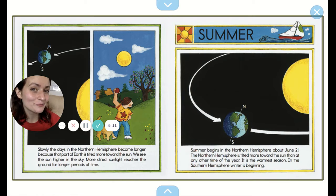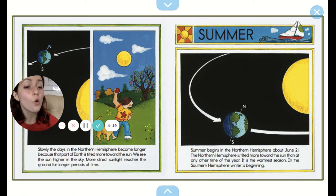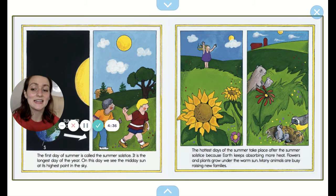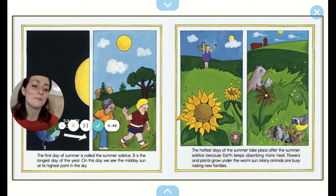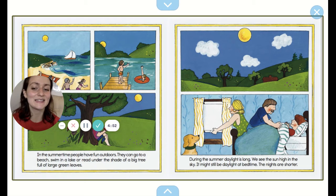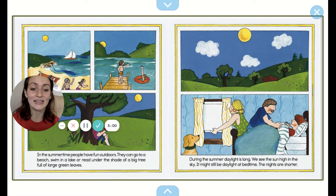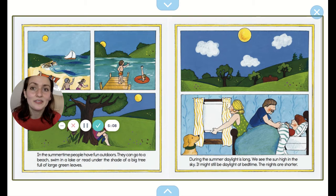What season is the most hot? Summer! Summer begins in the northern hemisphere about June 21st. The northern hemisphere is tilted more toward the sun than at any other time of the year — it's the warmest season. In the southern hemisphere, winter is beginning. The first day of summer is called the summer solstice — it is the longest day of the year. On this day, we see the midday sun at its highest point in the sky. The hottest days of summer take place after the summer solstice because the earth keeps absorbing more heat. Flowers and plants grow under the warm sun, and many animals are busy raising new families. In the summertime, people have fun outdoors — they can go to a beach, swim in a lake, or read under the shade of a big tree. During the summer, daylight is long and we see the sun high in the sky. It might still be daylight at bedtime, and the nights are shorter.